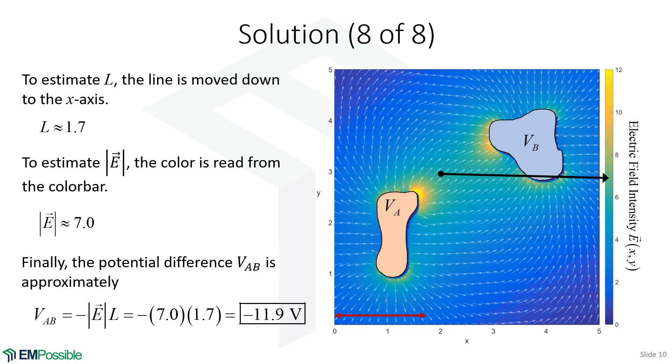So then the voltage AB is minus magnitude of E times L. We derived that a couple slides ago. That's minus 7 times 1.7, and we get minus 11.9 volts. Call it 12 volts, minus 12 volts.